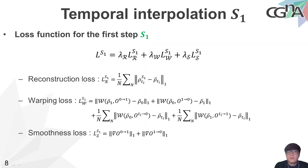The loss function for the first step consists of three terms. The first is the reconstruction loss, which quantifies the difference between the temporally interpolated smoke frame and the ground-truth smoke frame. The second is the warping loss, representing the difference between the backward warping result and the ground-truth smoke frame. The final term is the smoothness loss, which encourages neighboring pixels to have similar optical flow values.